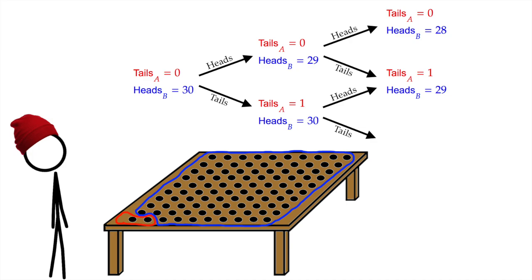And finally, case four, tails tails, so tails in A goes up by 2, and heads in B stays at 30.